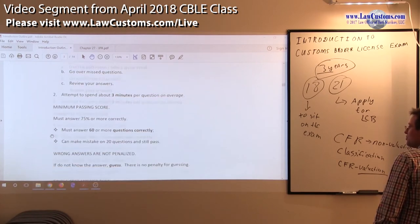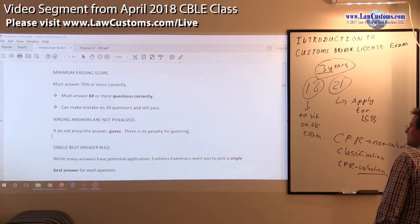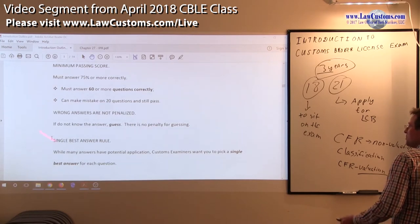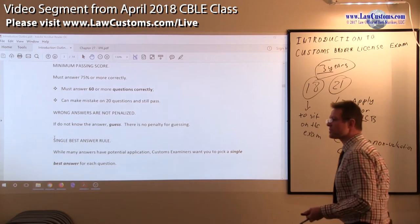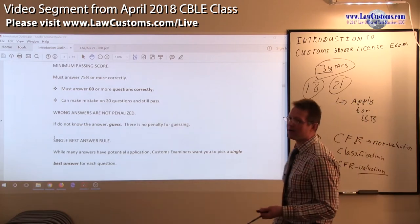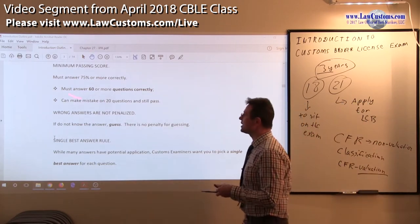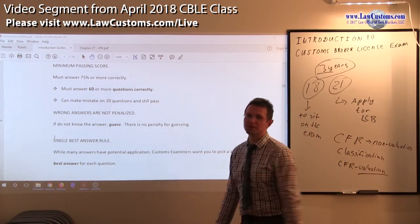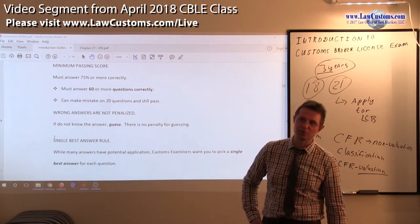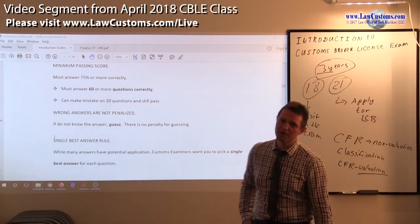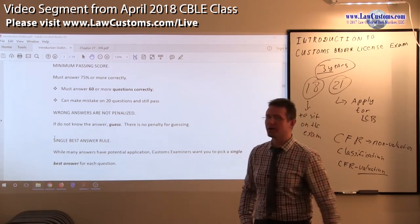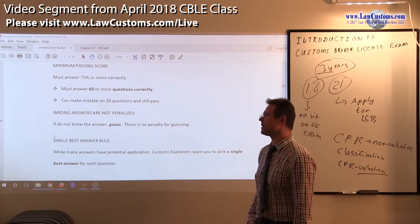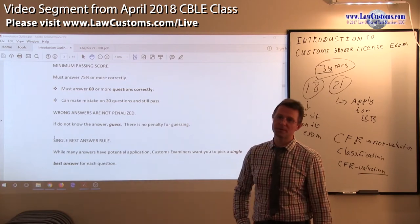Do not leave anything blank. The minimum passing score is 75%, with 80 questions in total, which means you only need to get 60 questions right. So you have 60 questions that are the borderline.